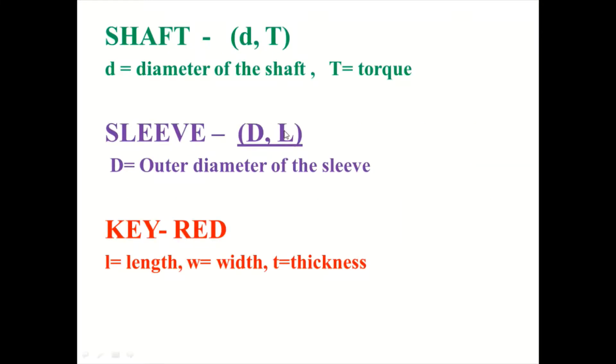These are the notations which are used to calculate the parameters: diameter, torque, and outer diameter of the sleeve. And then for the key: the length, width and the thickness. All the parameters and dimensions are available in the PSG design data book.